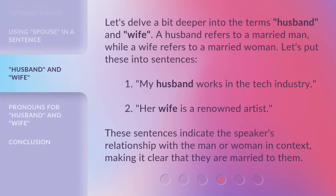Let's delve a bit deeper into the terms 'husband' and 'wife.' A husband refers to a married man, while a wife refers to a married woman. Let's put these into sentences. 1. My husband works in the tech industry. 2. Her wife is a renowned artist. These sentences indicate the speaker's relationship with the man or woman in context, making it clear that they are married to them.